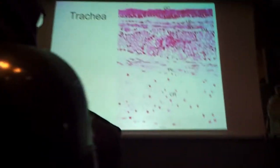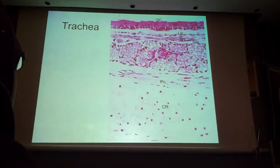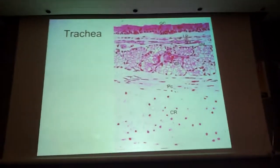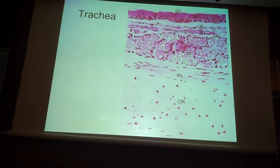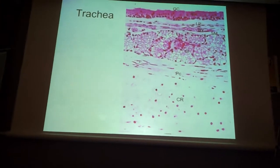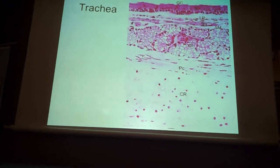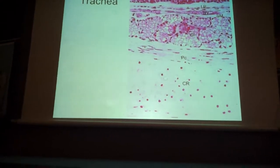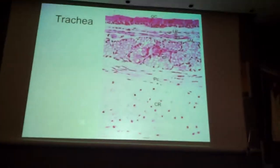We will go over views of some sections or areas of the respiratory system. To start with, there is a trachea. This is a section showing the wall of the trachea. As you know, the trachea is relatively big, so it would be difficult to have a view of the lumen.